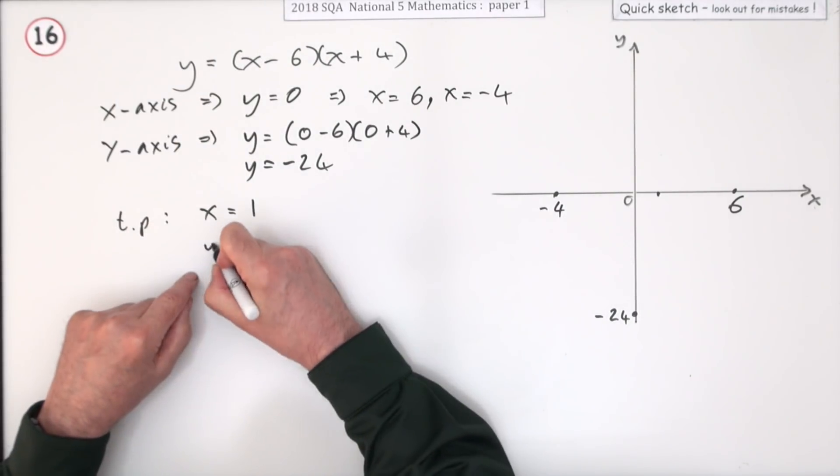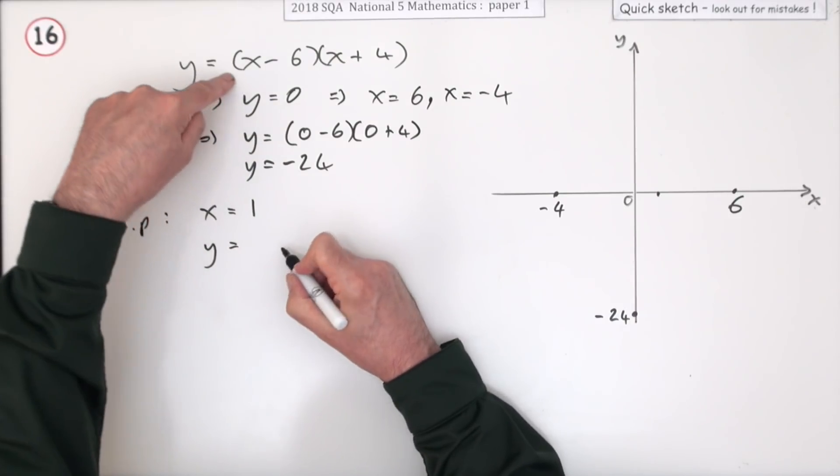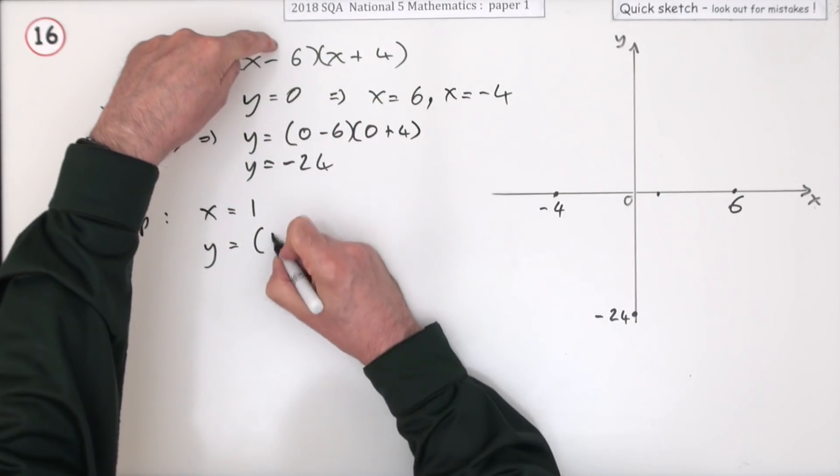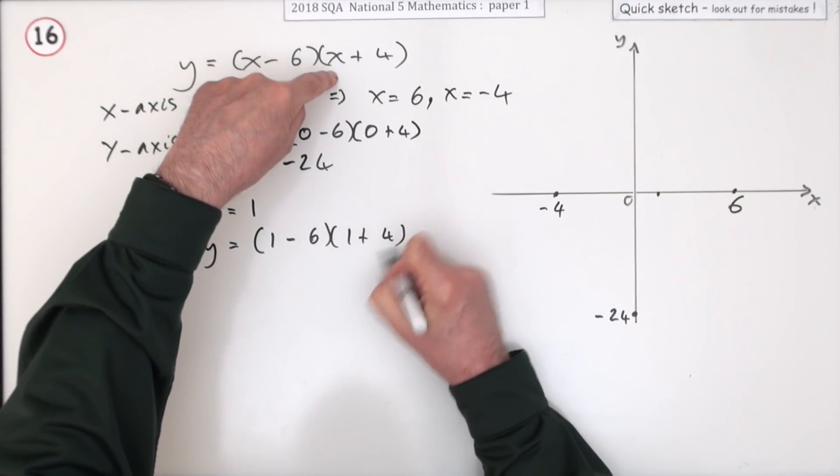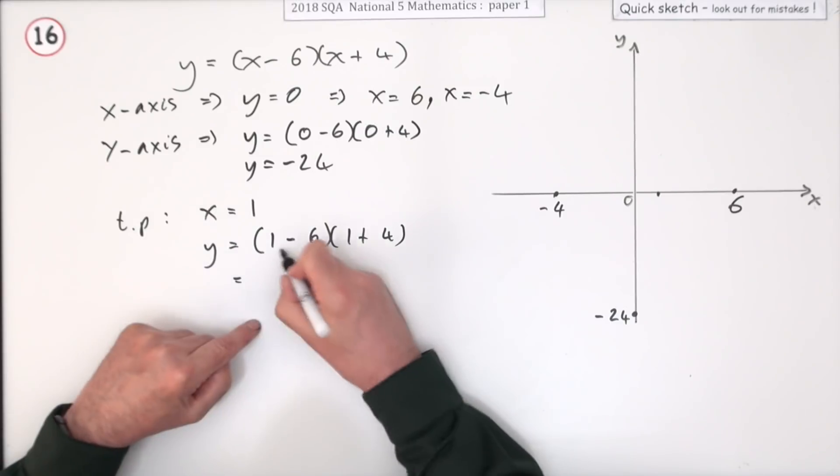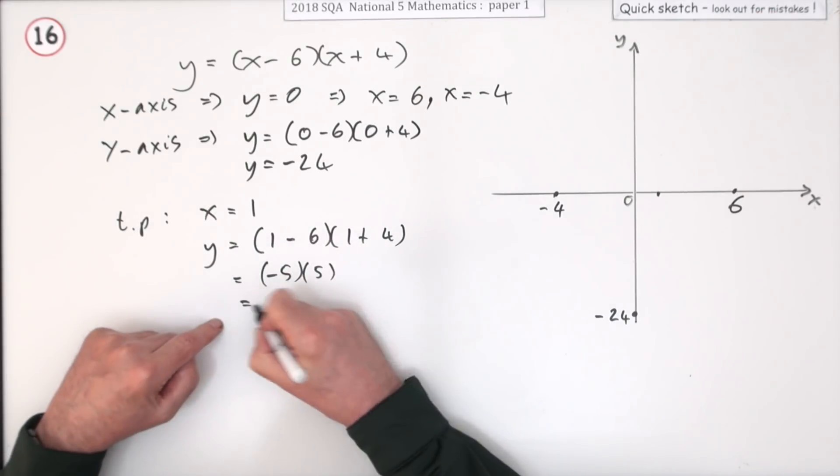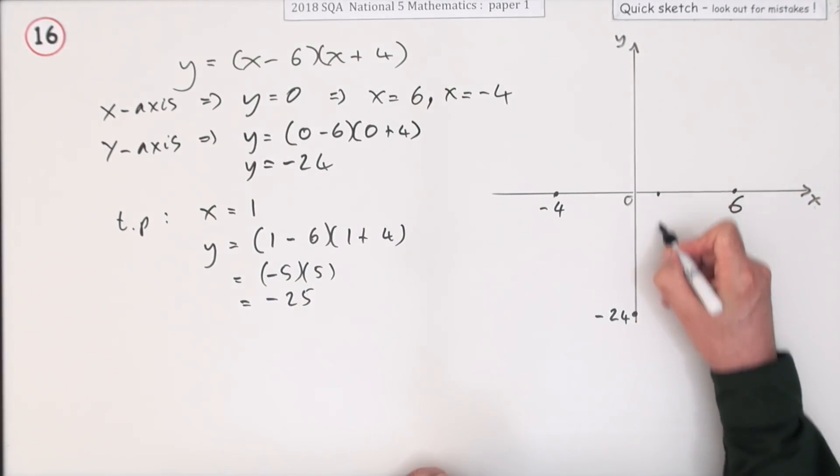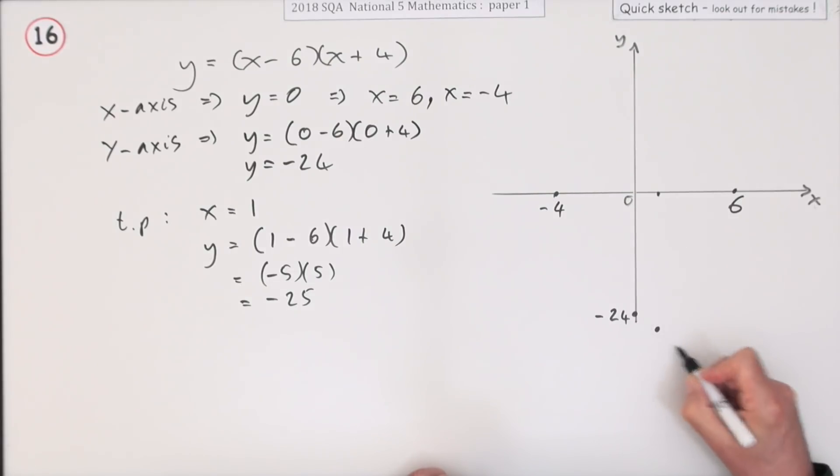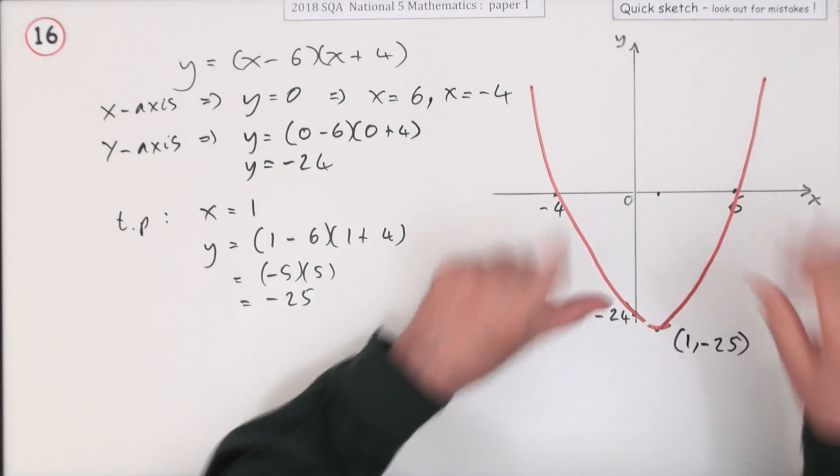Now that you know one of the coordinates, put it into this, you can find the other one. So if x is 1, what's y equal to? You don't need to multiply it out, just use it in this form: 1 minus 6, and that'll be 1 plus 4. So you've got that's negative 5 now, and that's 5, so that's negative 25. So it's just a wee bit lower than that, so it's down here. There's the turning point at 1, negative 25, then sketch it through there, hopefully making a better job of a neater looking job than that.